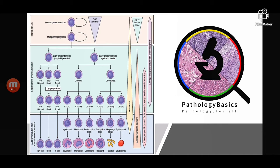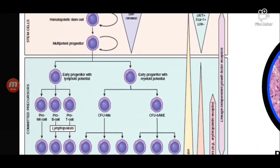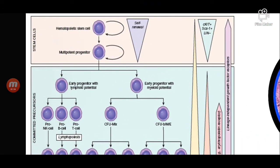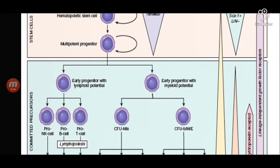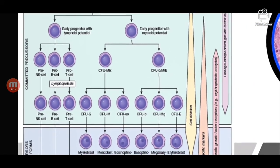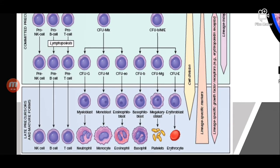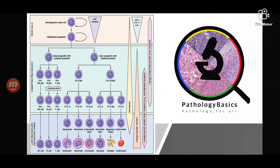To understand this, let us first see the maturation series of the myeloid cells. The maturation starts from the hematopoietic stem cell, which is divided into the lymphoid progenitor and the myeloid progenitor. The myeloid progenitor gives rise to various granulocytes like neutrophils, monocytes, eosinophils, and basophils, as well as platelets through megakaryocytes and erythrocytes through erythroblasts. In myeloid neoplasms, all or some of these cells increase in number.